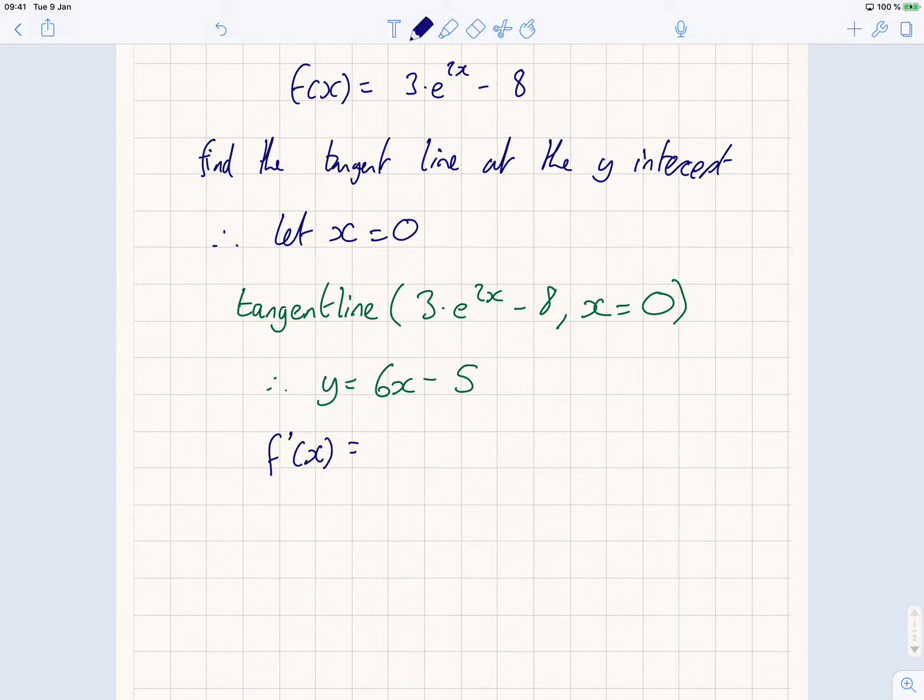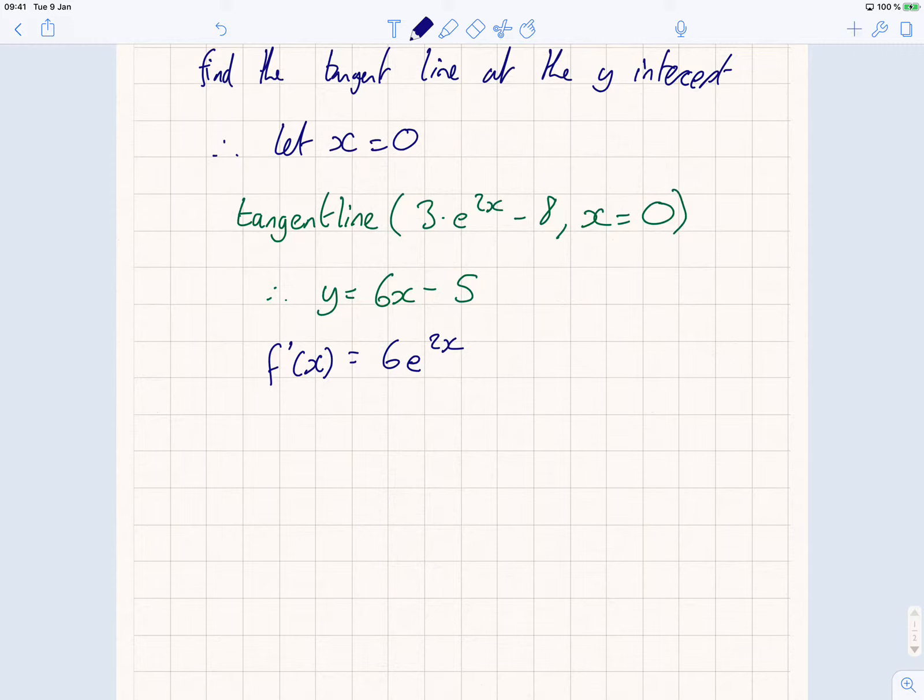So, that becomes 6e to the 2x. Remember, the 2 came forward, so you differentiate 2x to give you 2. 2 times 3 is 6. Now, I put in 0 into x, so I get 6 times e to the 2 lots of there, which is equal to 6 times e to the 0. Anything to the power of 0 is 1, so it's 6 times 1, which is 6, so the gradient is 6.